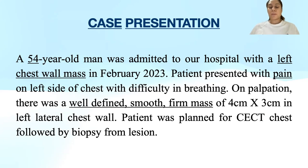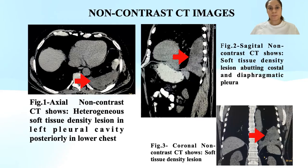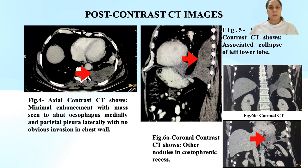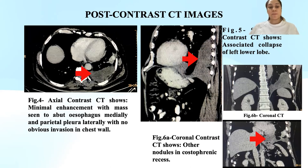The patient was then planned for CECT chest followed by biopsy from the lesion. Non-contrast CT images revealed a heterogeneously soft tissue density lesion in the left pleural cavity posteriorly in the lower chest wall, which was seen abutting costal and diaphragmatic pleura. On post-contrast images, the lesion showed minimal enhancement.